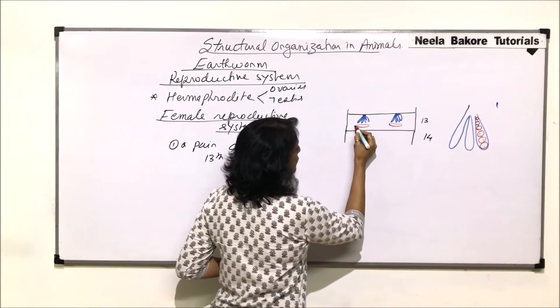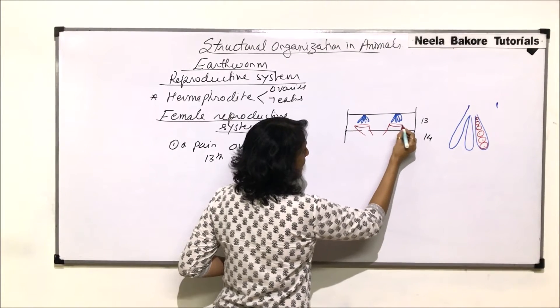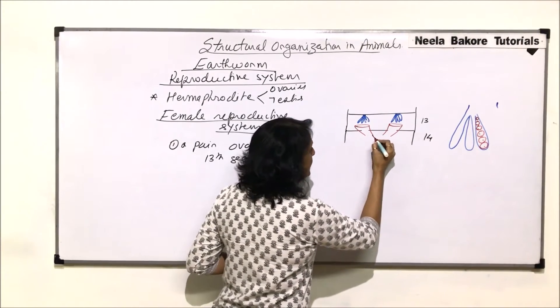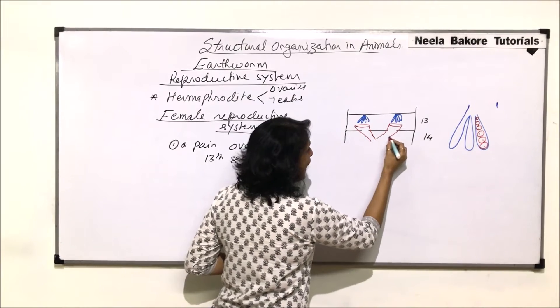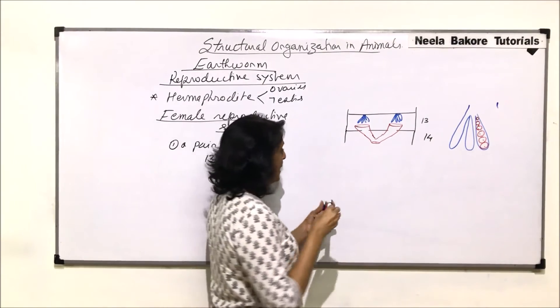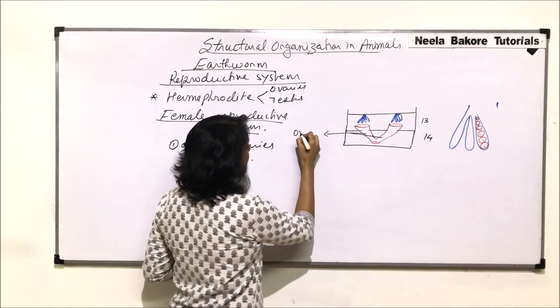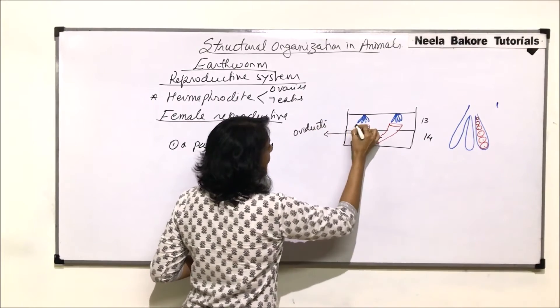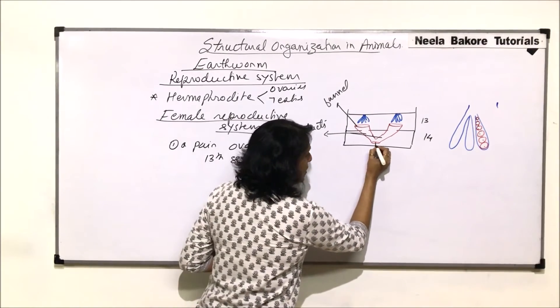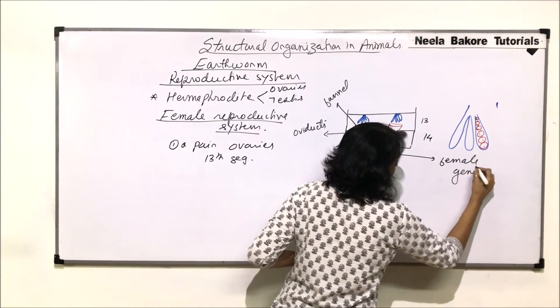The egg is released and collected by a funnel-like structure, which leads to a tubular part that is the ova duct. These two ducts fuse and there is a common opening known as the female genital pore. These two tubes are the ova ducts and this is the funnel which collects the egg, and a common opening which is the female genital pore.